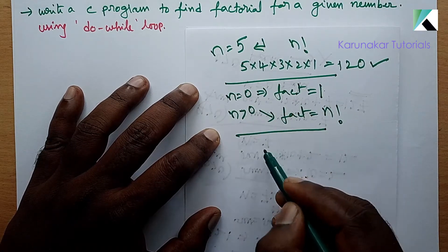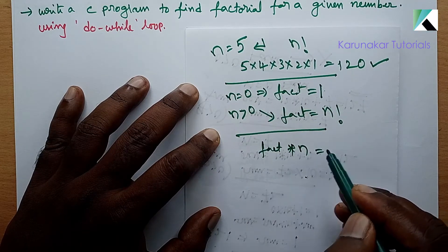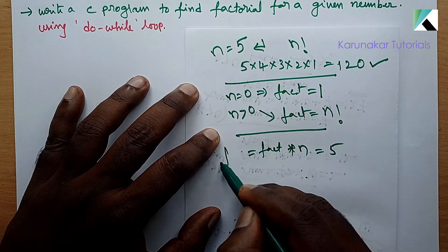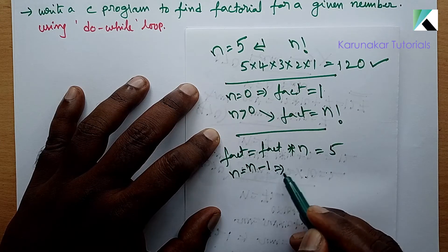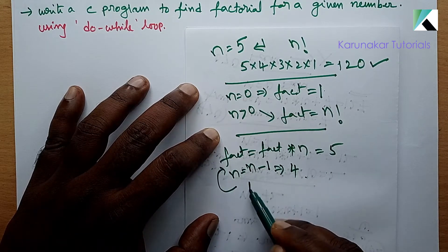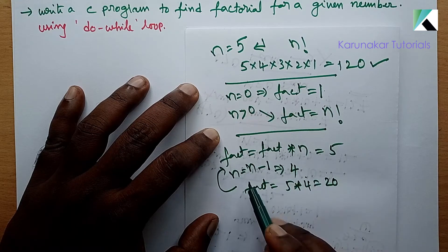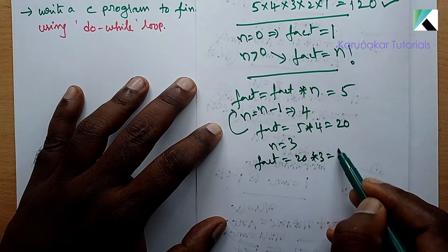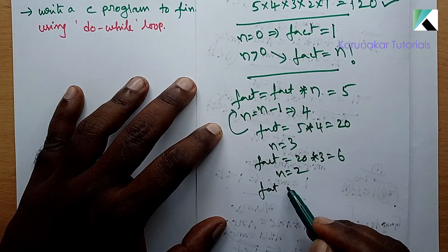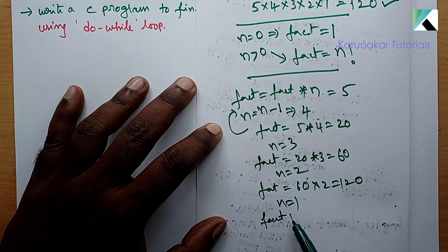n greater than 0 means fact is equal to fact into n, n is equal to n minus 1. So fact is equal to 5, 5 into 4 is equal to 20. Now n value is equal to 3, fact is equal to 20 into 3 is equal to 60. Now n value is equal to 2, fact is equal to 60 into 2 is equal to 120. Now n is equal to 1, fact is equal to 120 into 1 is equal to 120.